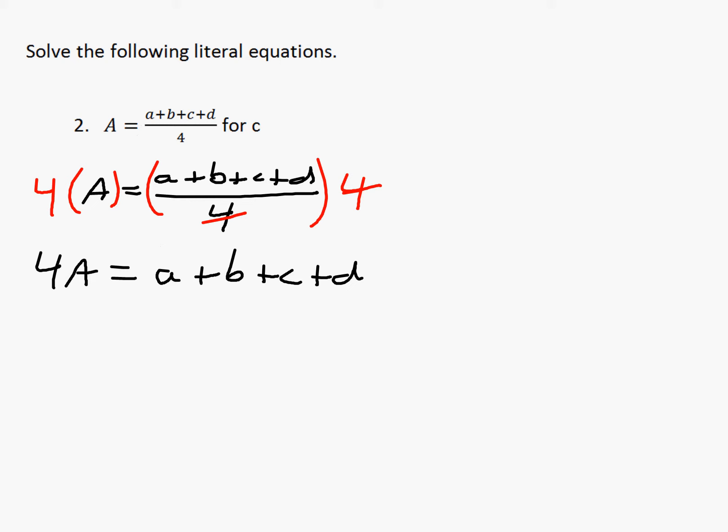Now in the final step here, we want to solve for c, and we notice that a, b, and d are all added on the side that c is in. So we can subtract each of those from the right side in order to get c by itself, and we also subtract it from the left side.